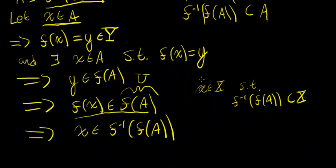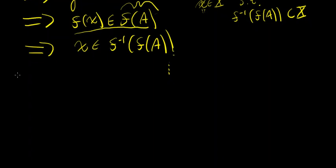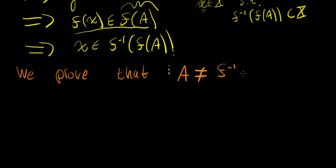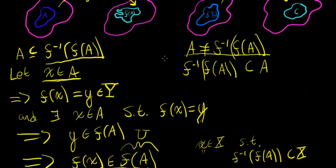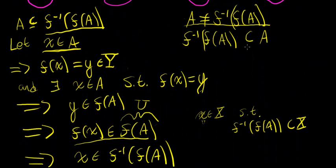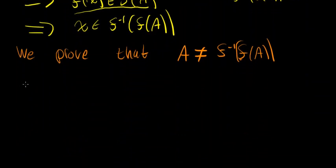But now we want to talk about why they're not equal. We want to prove that A is not equal to f⁻¹(f(A)). In other words, we're going to prove that the inverse image of the image of A is not a subset of A. Let's do this by contradiction. I've talked about proof by contradiction in previous videos.